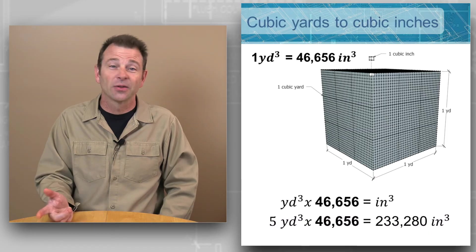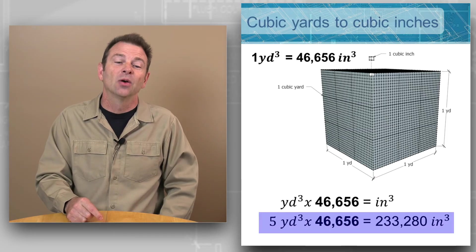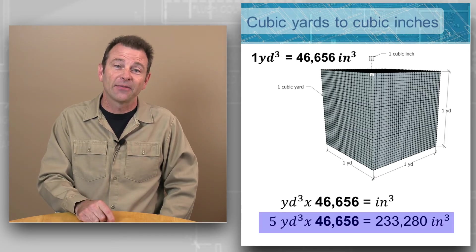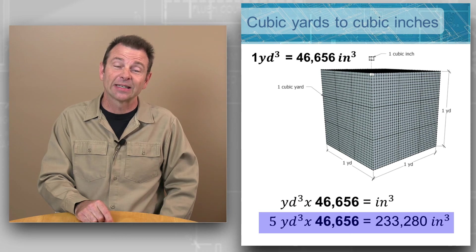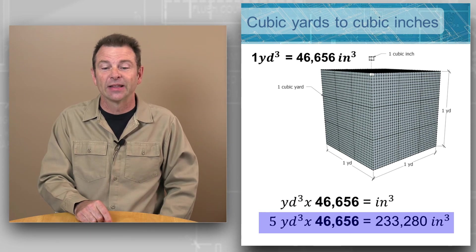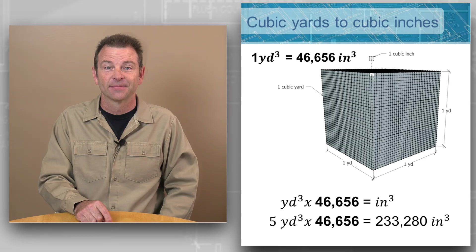We can go the other way. We can take our five cubic yards, multiply it times 46,656 — that equals 233,280 cubic inches.